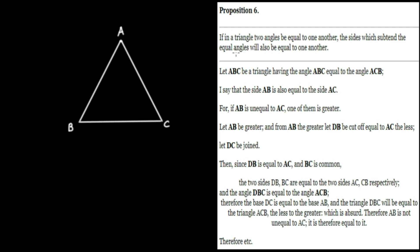So let's check out the text. If, in a triangle, two angles be equal to one another, the sides which subtend the equal angles will also be equal to one another. Let ABC be a triangle having the angle ABC equal to the angle ACB. So those two are the same. The claim is, I say that the side AB is also equal to the side AC. So that's our claim. We aim to demonstrate that.